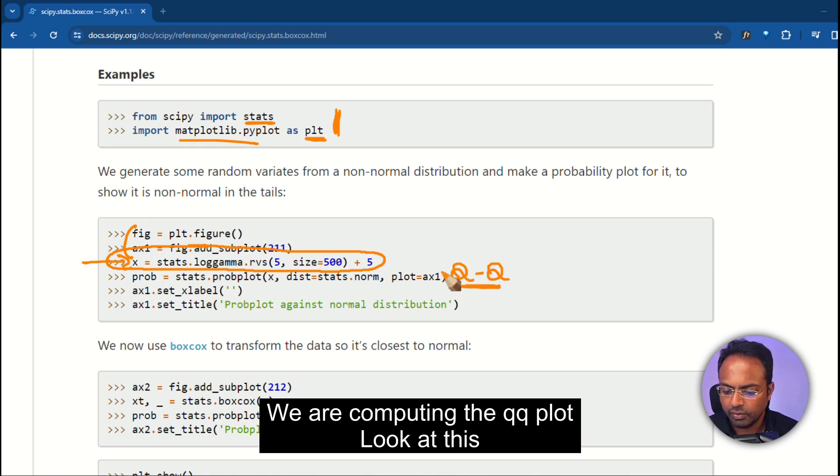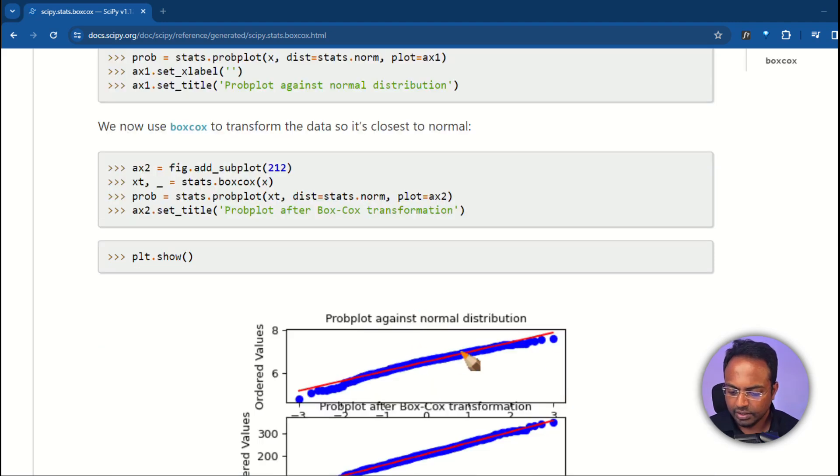We are computing the QQ plot. Look at this. This is the QQ plot that we are plotting over here. For a variable to follow a normal distribution, it should lie perfectly on the red line we have here. But for this plot, you see that the points here are deviating away from the red line, which is an indication that this is not following a normal distribution.